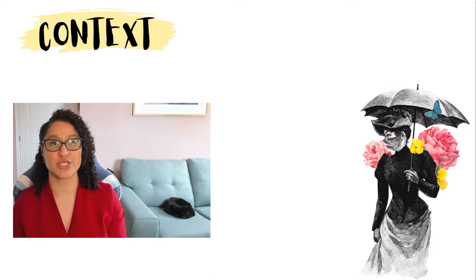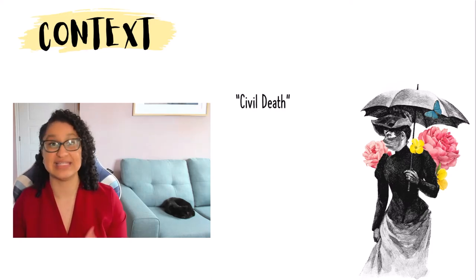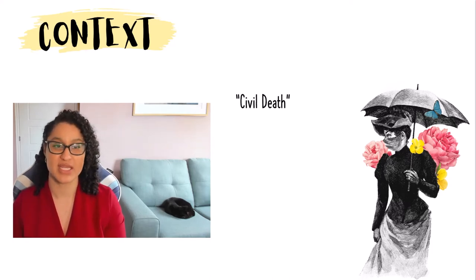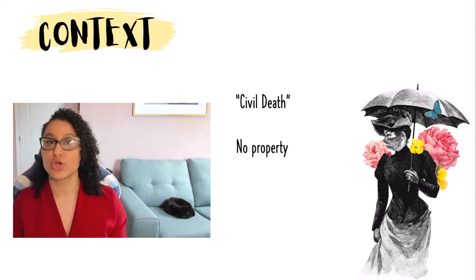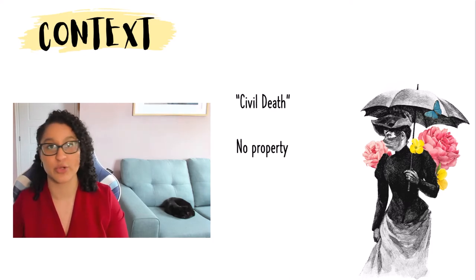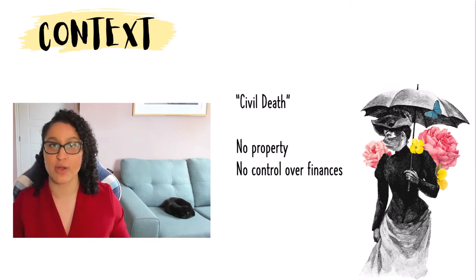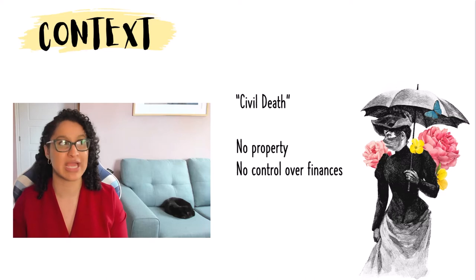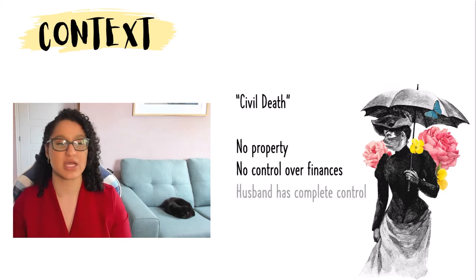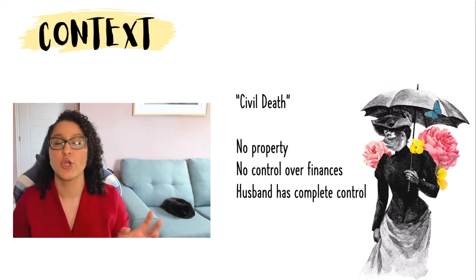It was so drastic that there was a saying in Louisiana in 19th-century America that it was like 'civil death' or 'legal death,' because of how much a woman was giving up in order to get married. Once a woman got married, she could no longer own any property; if she owned property before, it became her husband's. She had no control over her finances — any money she had before became her husband's, and any money she earned while married was not allowed to be hers to spend. It was under complete control of her husband.